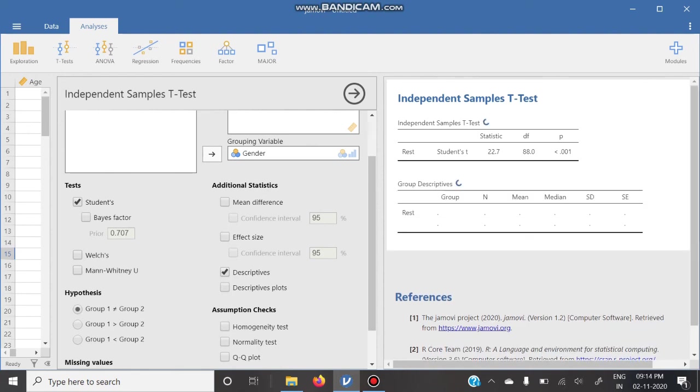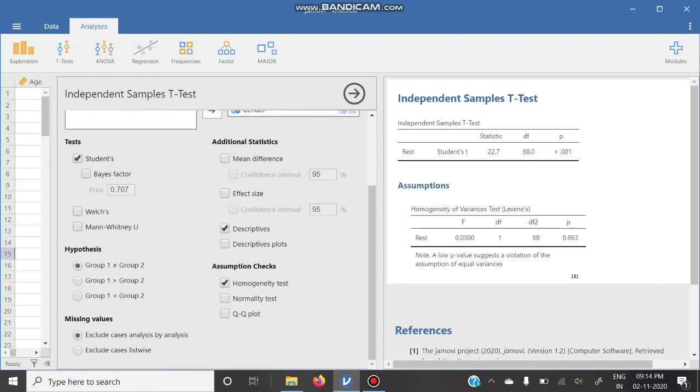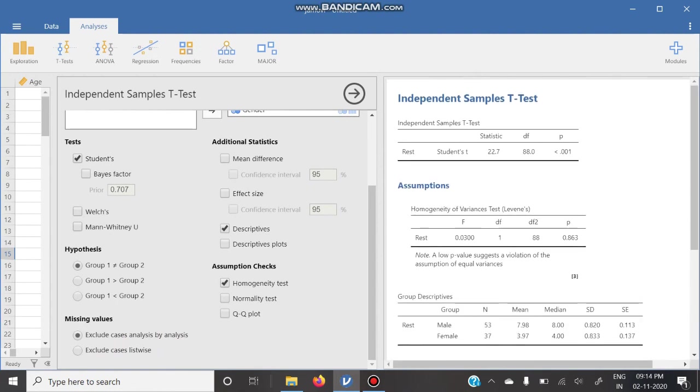Here we have to choose descriptives. Already Student's t is chosen. Independent sample t is also called Student's t. It's already here. Now we have to test the homogeneity also of the two groups, so we have to check the homogeneity test. So all the three are here. The results came on the right side.